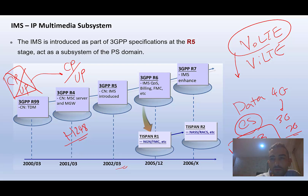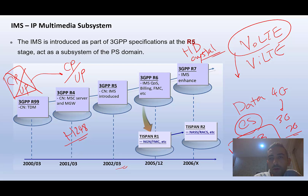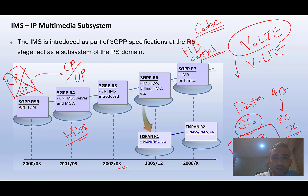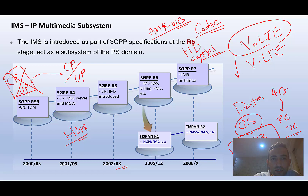When you have IMS and your VoLTE service is enabled, CS fallback will not happen and you are always online. Another benefit is high-definition crystal-clear voice, which is due to optimized codecs such as AMR Wideband — Adaptive Multi-Rate Wideband. Other codecs can also be used, and I have seen this in some operators.